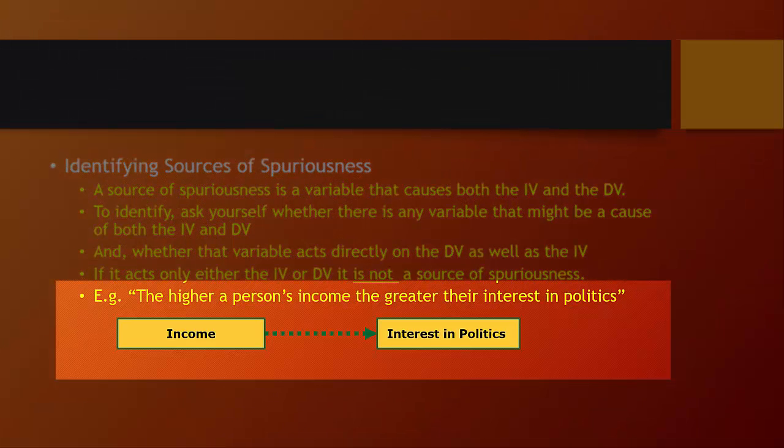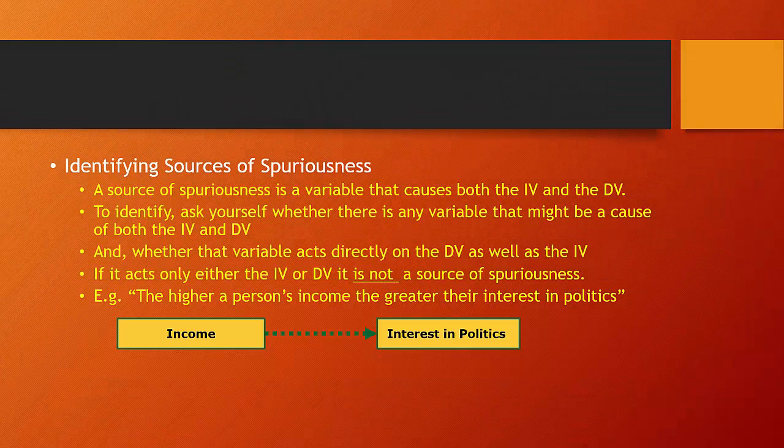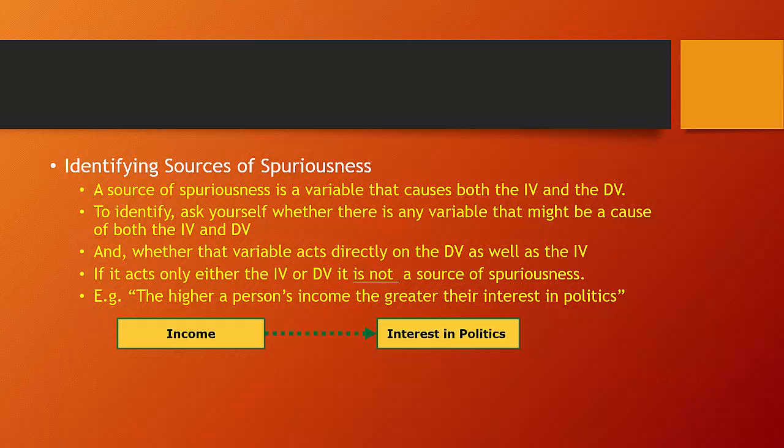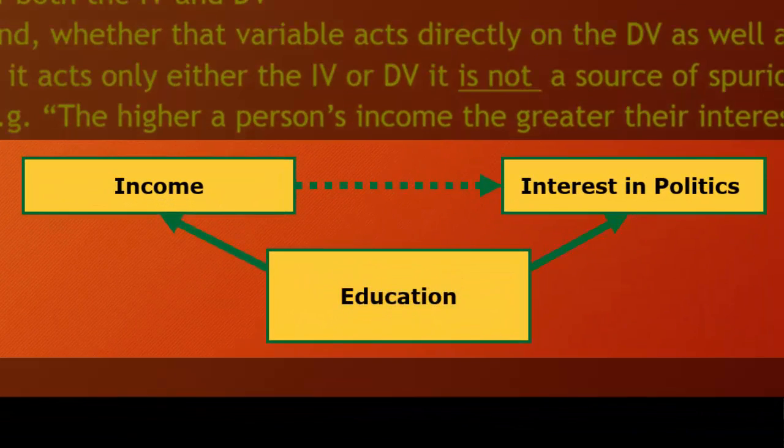So let's think about this example. The higher a person's income, the greater their interest in politics. Is there a variable that causes both someone's income and how interested they might be in politics? And a variable, for example, such as education, might plausibly explain both income and interest in politics.